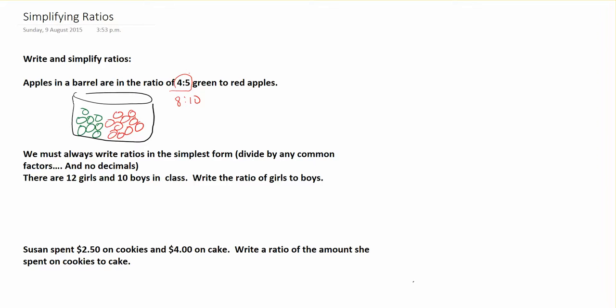It just gives us this idea of roughly how much compared to one or the other, who's got more of one to the other, but not exactly how many we have. If I tell you that a barrel has a ratio of 4:5 green apples, that could be four apples to five apples, or it could be 400 green apples to 500 red apples. We don't know how much unless they tell us, but we can tell the ratio between.